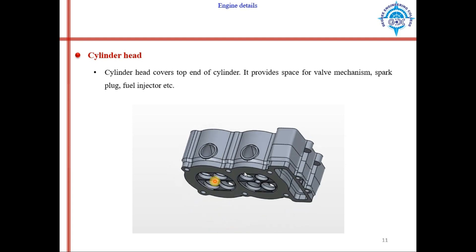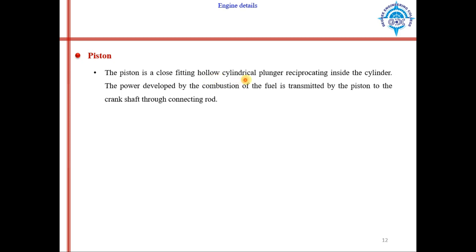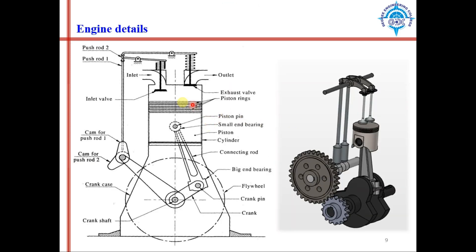The next component is the piston. The piston is basically a close-fitting hollow cylindrical plunger reciprocating inside the cylinder. The power developed by combustion of fuel is transmitted by the piston to the crankshaft through the connecting rod. Combustion occurs here, generating high pressure and temperature; due to that high pressure, the piston moves downward, and this downward movement is converted into rotational motion of the crankshaft through the connecting rod and crank.